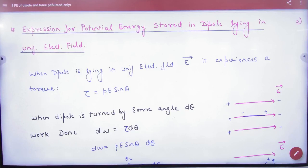Next is potential expression for potential energy stored in a dipole lying in a uniform electric field. NCERT point of view is important. This numerical will come. This theory can also come. So what is given in it?